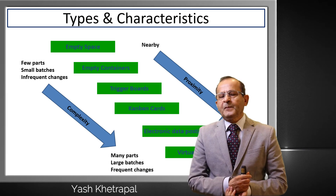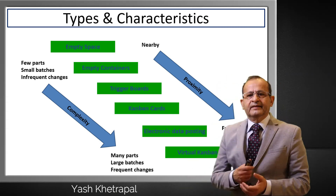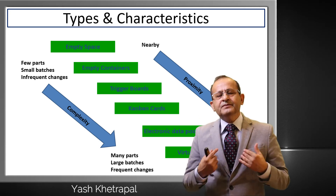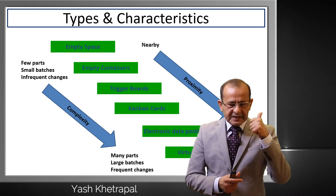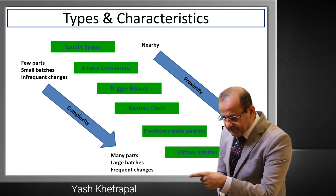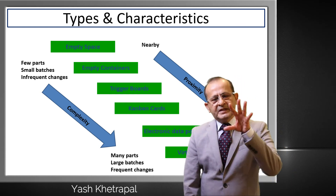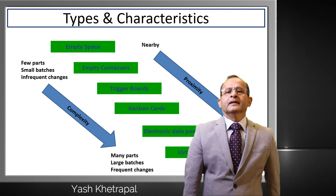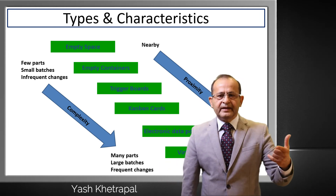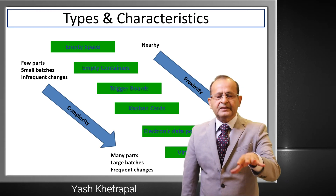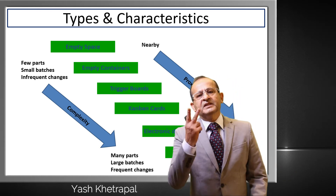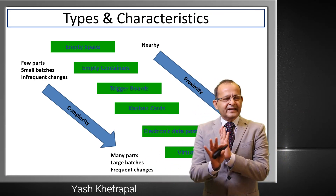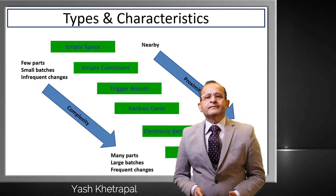Empty space means material has been consumed — it has to be replenished. Empty space itself gives the signal to replace. How do you do that? You have two bins of material. When you consume one bin, push the empty bin aside — your store person notices and replaces it. This we call the two-bin method. Very simple, very easy, very basic — you don't need any software, only common sense.